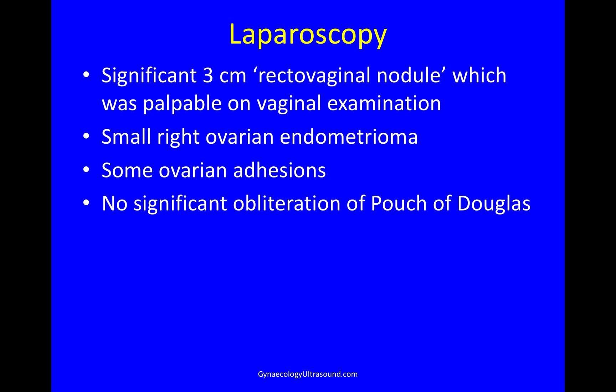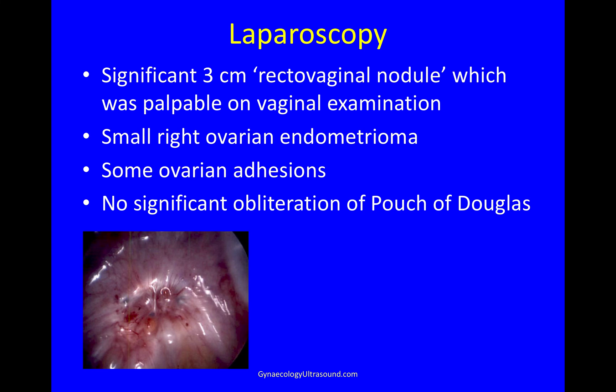This patient had a laparoscopy. On vaginal examination, they noted a three centimetre rectovaginal nodule, a small ovarian endometrioma, some ovarian adhesions, and no significant obliteration of the pouch of Douglas. But they did see this low down in the pouch of Douglas — you can see that this very deep rectal nodule is adherent to the epithelium of the pouch of Douglas. So you could see far more on ultrasound than you can at laparoscopy.